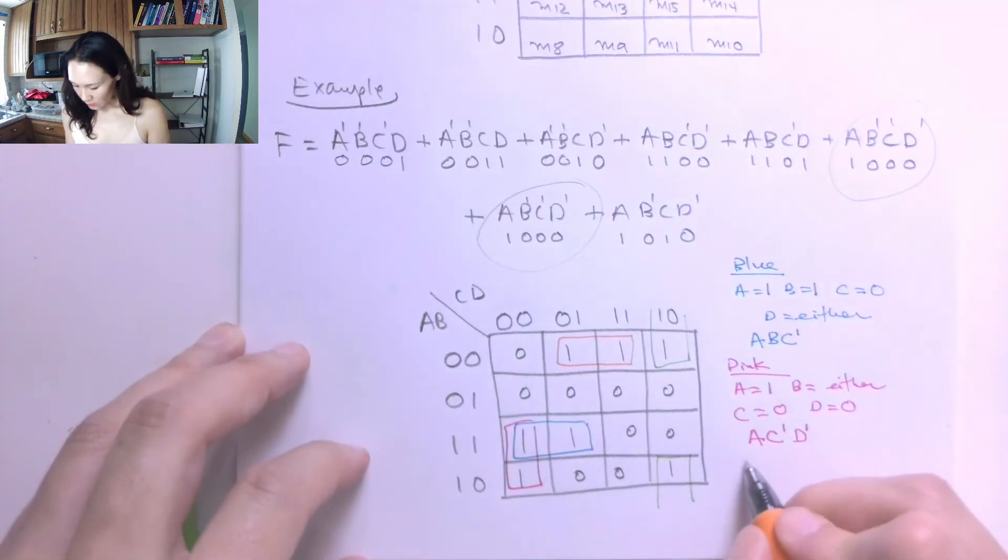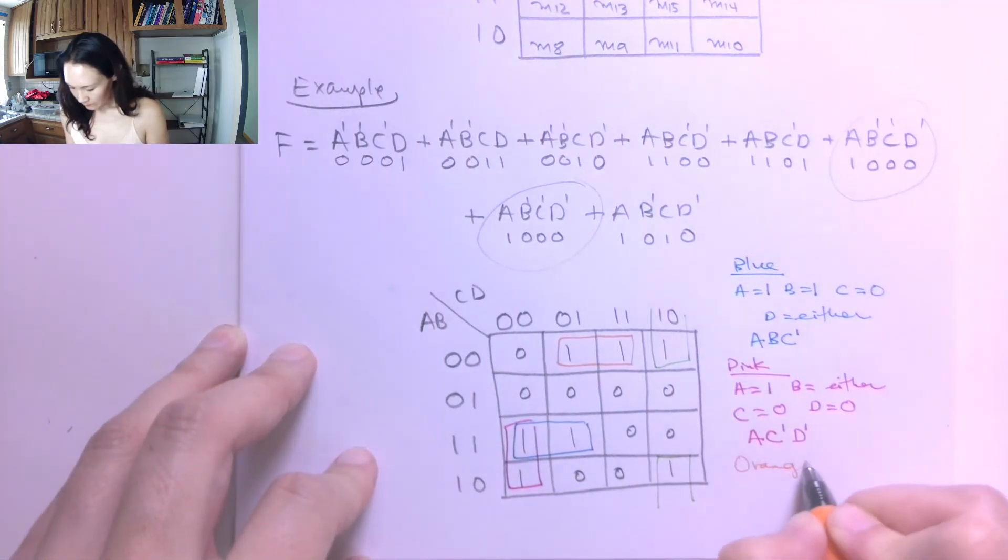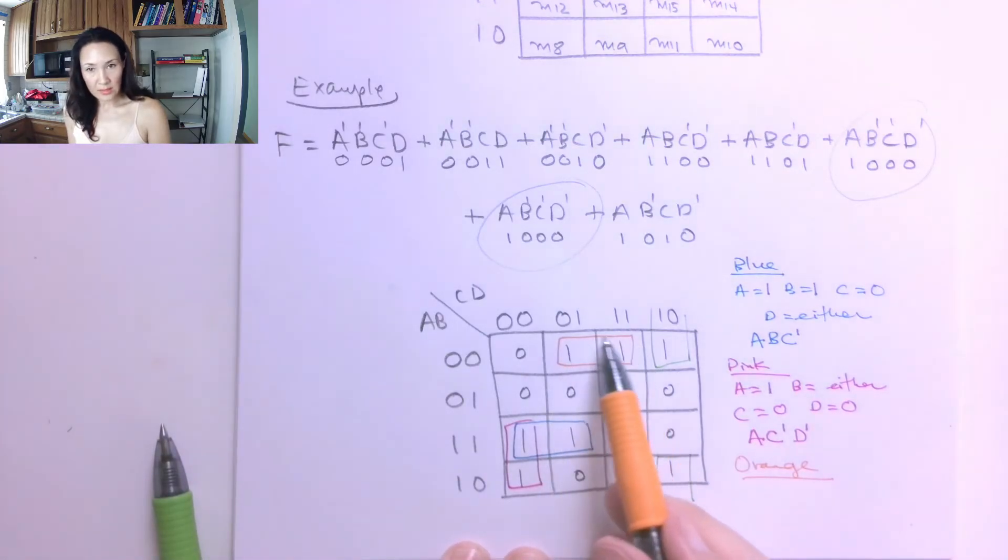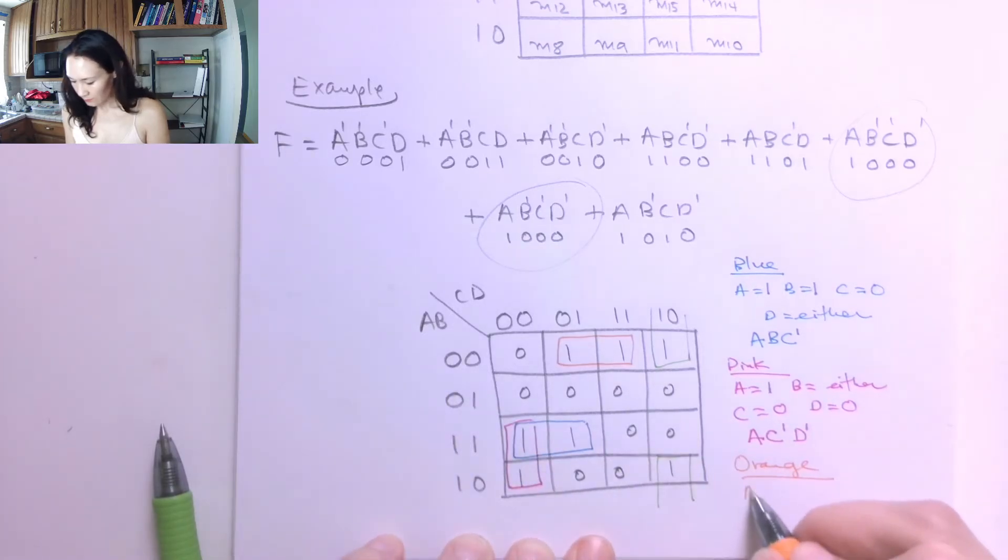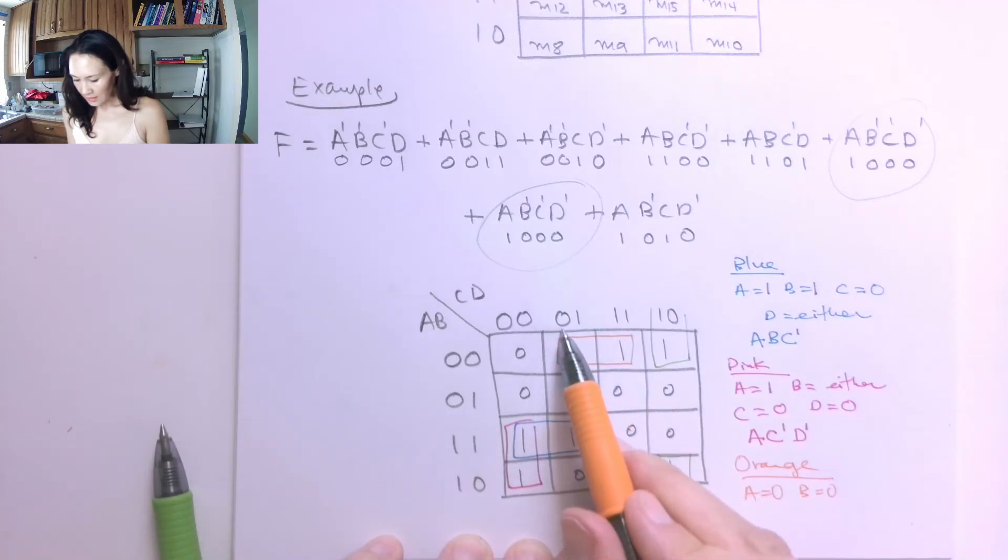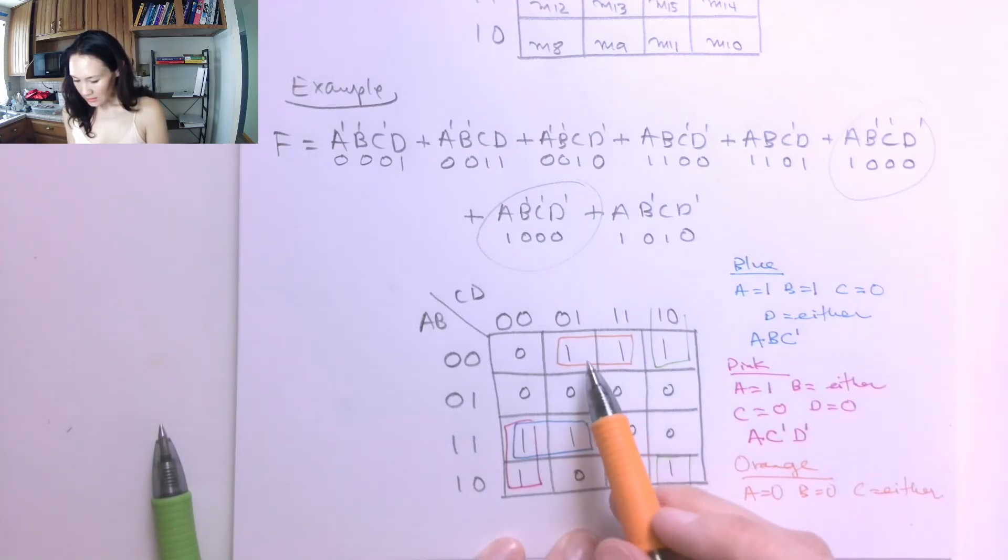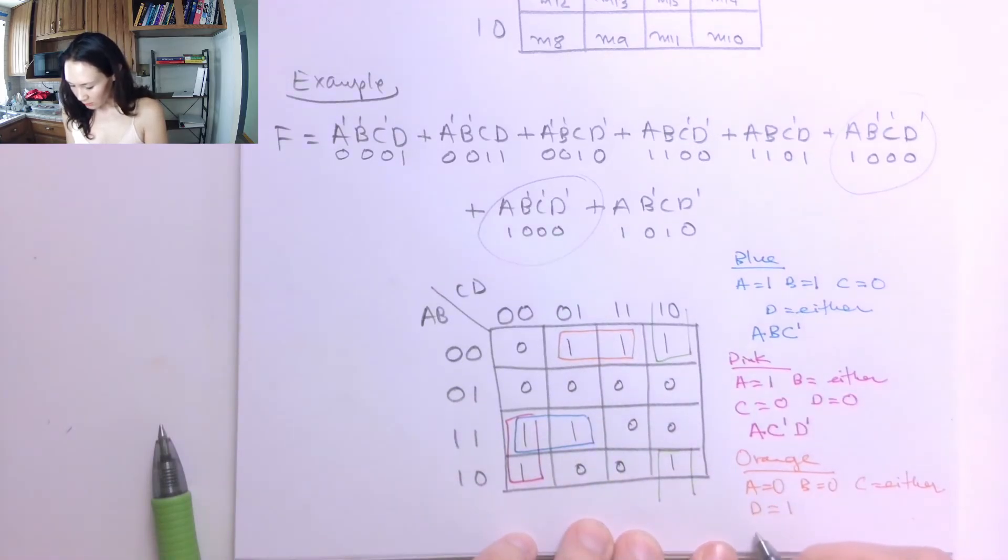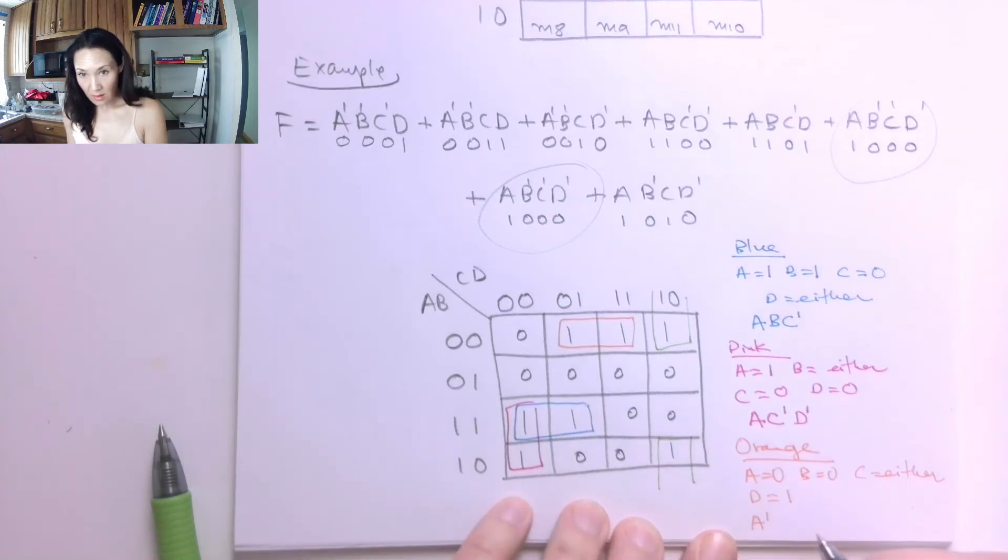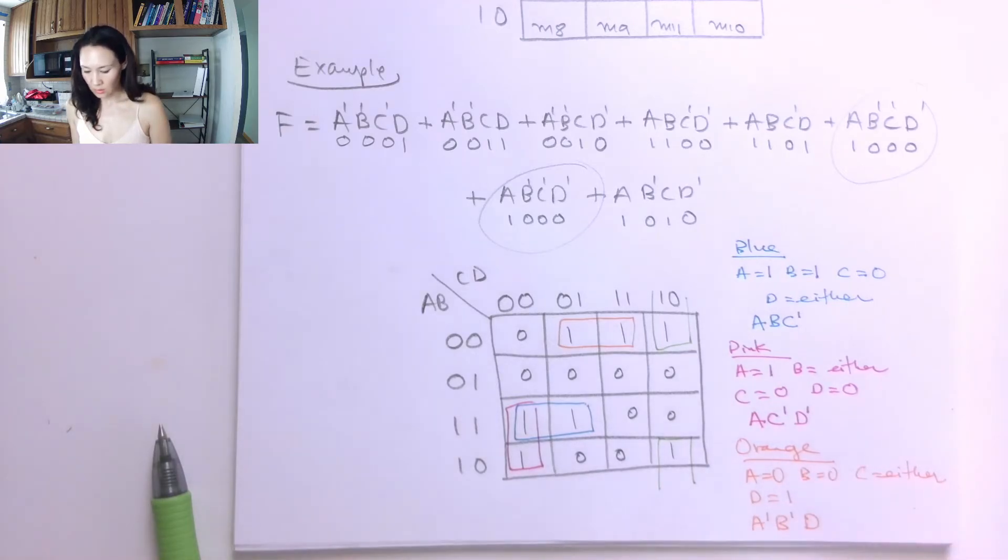Okay, moving on to the orange group. For orange, I look at what conditions give me this orange group. I have A is 0, and B is 0. A is 0, B is 0. And then up here, I have C can either be 0 or 1, and I'll have 1s in this orange group. So C is either. That means we can reduce it out. And D has to be 1 or 1. So D is 1. So my literals are A naught, B naught, D. And there's no C in this term, because it got reduced out.